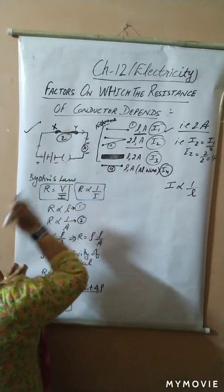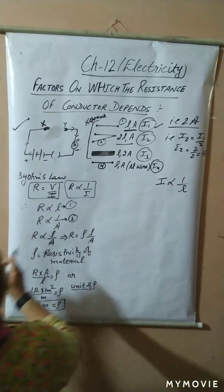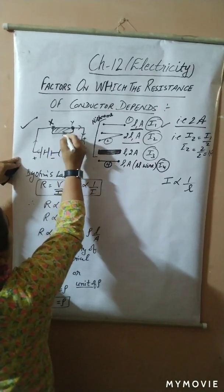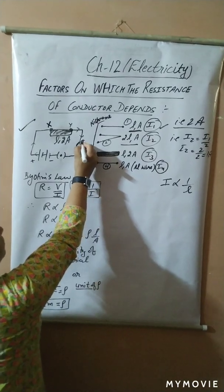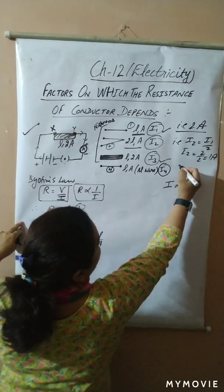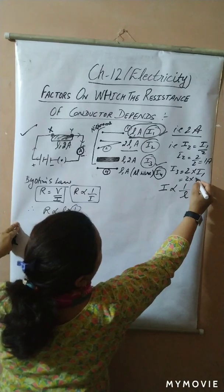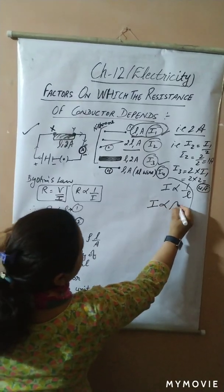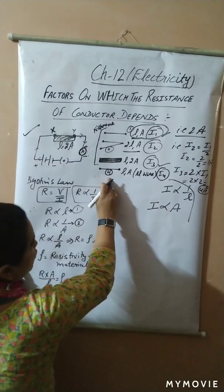Now for the third wire: plug out the key, remove the previous wire, and connect the third wire. This is a thick wire — same length but area is doubled. Plug the key again and observe the ammeter reading. This time i3 is twice that of i1, so i3 = 2 × 2 = 4 amperes. This proves that when area increases, current increases — current is directly proportional to area.